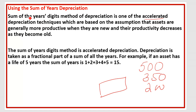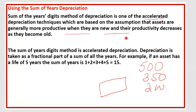The sum of years digit method is an accelerated depreciation technique based on the assumption that assets are generally more productive when they are new and their productivity decreases as they become old. If we buy any machinery, it will produce more in the first few years and then its productivity decreases as time passes.